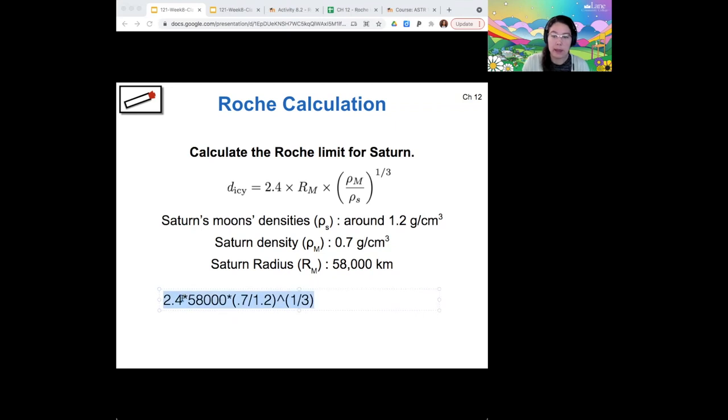So the equation would look like this. Let me make that an easier to read color and size here. So I would just say, I'm saying that the distance is given by 2.4 times 58,000 kilometers times 0.7 grams per centimeter cubed divided by 1.2 grams per centimeter cubed. Since those have the same unit, those are going to cancel. So I won't bother writing them out. And then that whole ratio is to the power of one third.